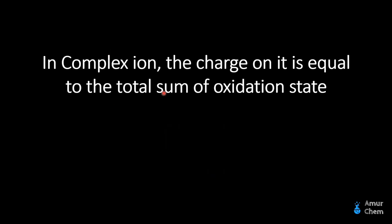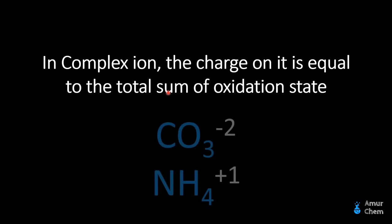Rule 3: in a complex ion, the charge on the ion equals the total sum of the oxidation states of all atoms. For example, CO3²⁻ and NH4⁺. In CO3²⁻, the sum of the oxidation states of one carbon and three oxygens is negative 2. In NH4⁺, the net charge on one nitrogen and four hydrogens is positive 1. So CO3 has an overall oxidation state of negative 2 and NH4 has an overall oxidation state of positive 1.